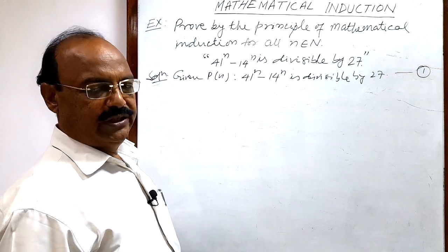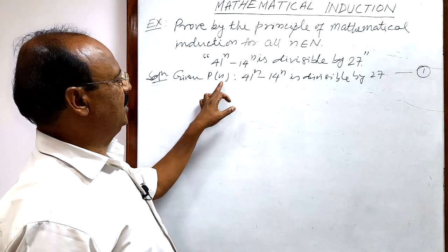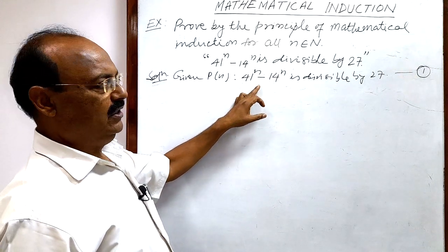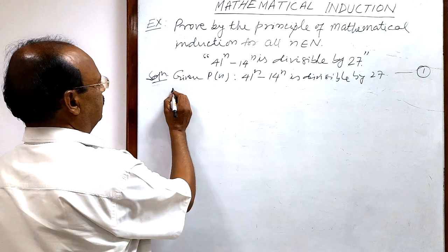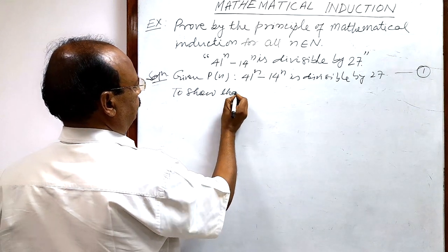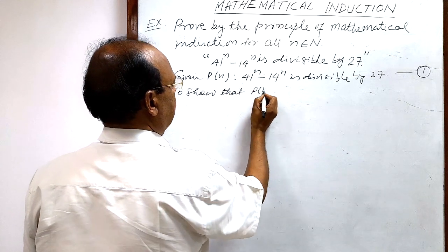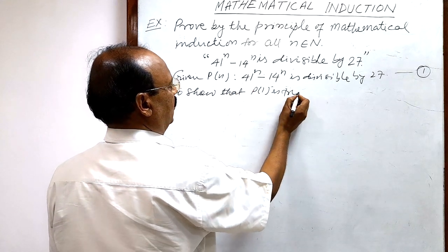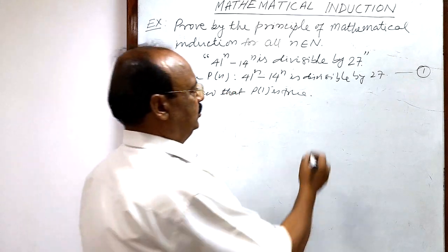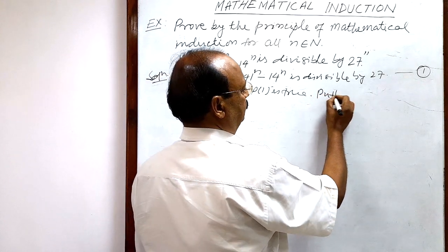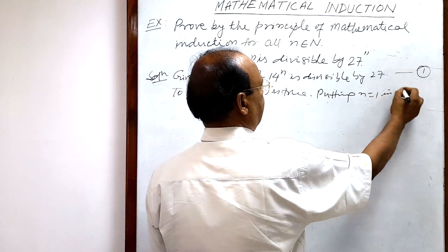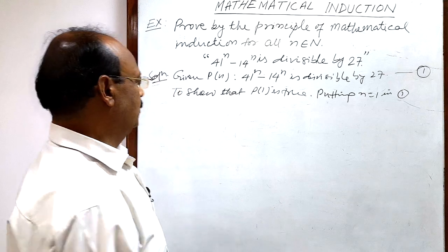First step: we have to show that P(1) is true, meaning we put n equal to 1. We get P(1) from relation number one. Therefore, putting n equal to 1 in relation number one: